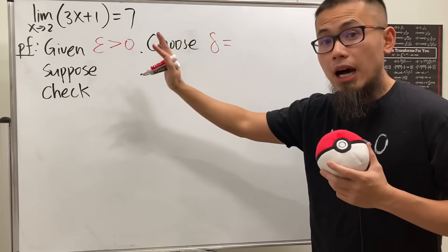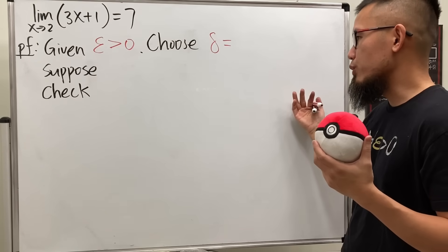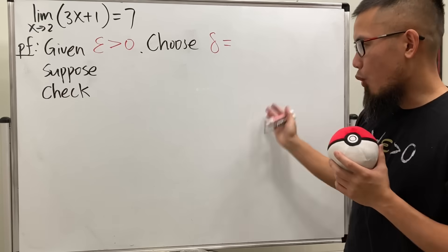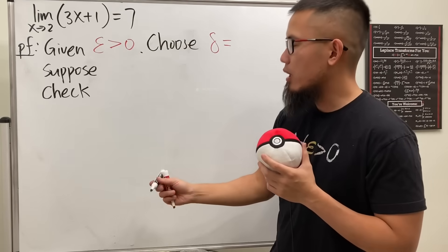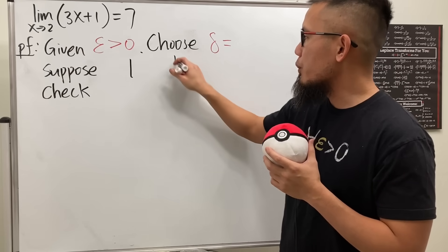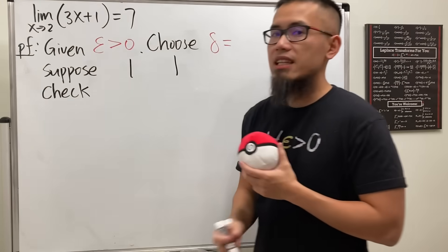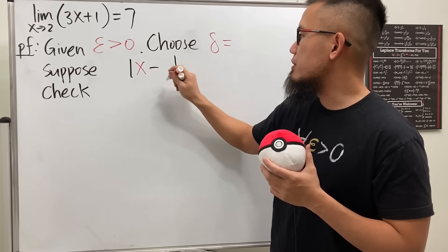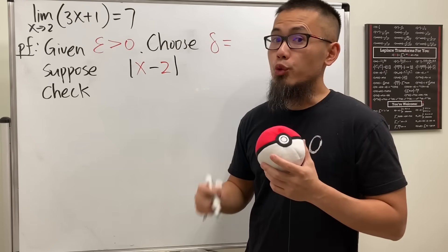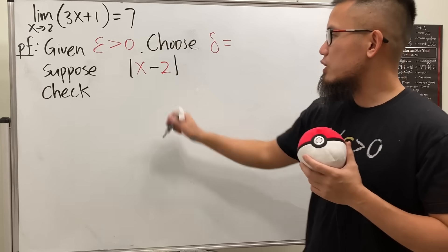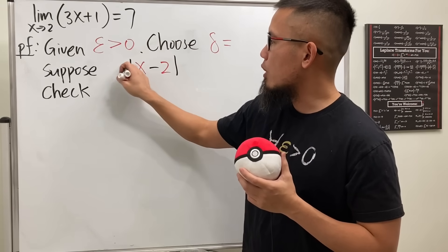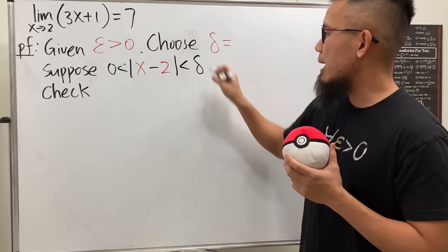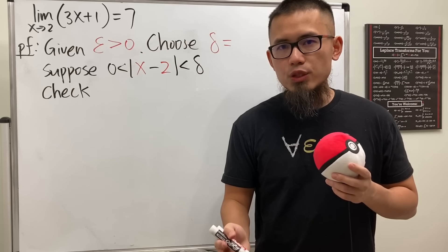A lot of students get stuck right here and don't know how to continue — that's a mistake. It's okay, just leave it blank and move on. Then you say 'suppose the absolute value of x minus 2' — this is the distance between x and 2. For the definition of a limit you don't need x to be exactly equal to 2, so you say this is greater than zero, and also less than delta.